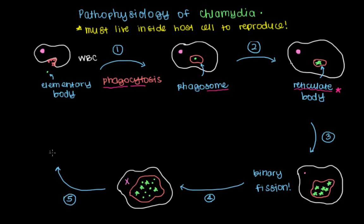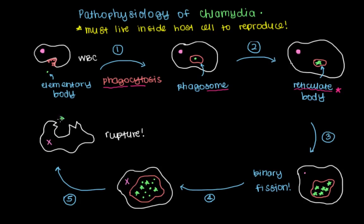As a result, the cell will literally pop — it'll burst open and rupture, and therefore die. This causes the reticulate bodies that were still converting, as well as the majority of chlamydia now in elementary body form, to be released into the extracellular matrix — released outside of the cell. There will be some reticulate bodies, but the majority will be elementary bodies, which can then be picked up by another white blood cell, repeating the cycle.